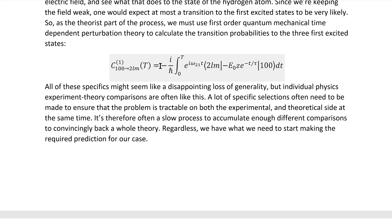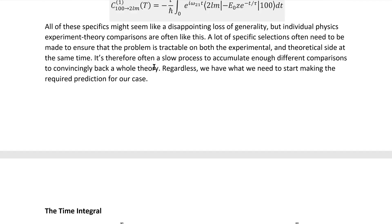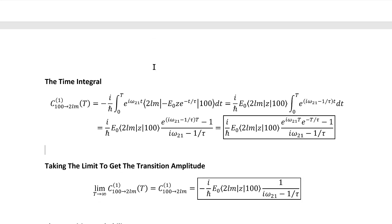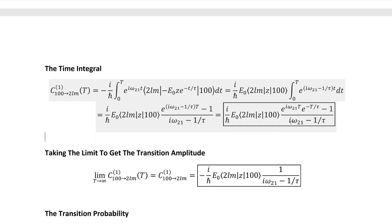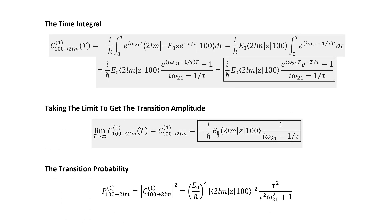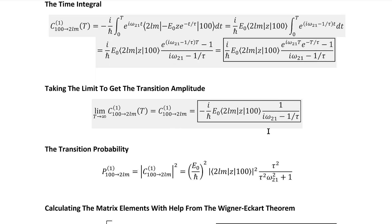We can then take the modulus squared of the resulting amplitude to get the actual probability, which is something we can compare to experiment. The easiest way to actually evaluate this is to start by just straight up doing the time integral, ignoring the time-independent matrix element inside here, because thankfully the potential we're dealing with is actually separable. From there, we can take the limit as T goes to infinity, which leaves us with a relatively simple result.